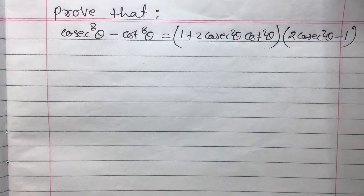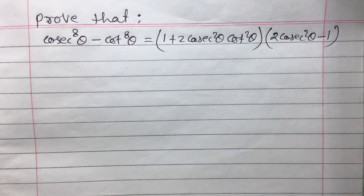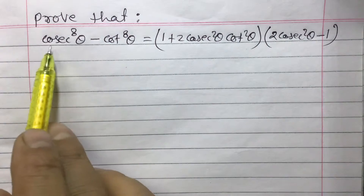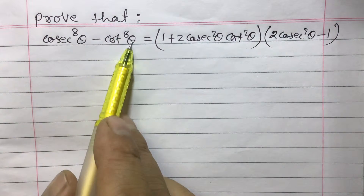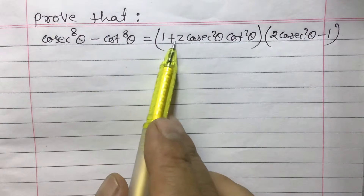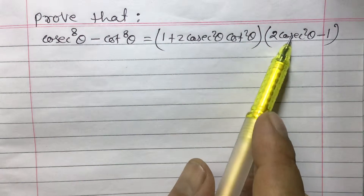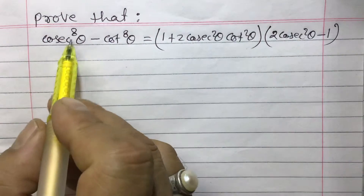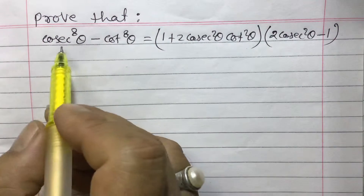Dear students, today I'm going to teach you one more question about trigonometry — proving identity for class 9. The question is: cosec⁸θ + cot⁸θ equals (1 + 2cosec²θ·cot²θ)(2cosec²θ - 1). Since the higher power (power 8) is on the left side, let us solve from the left side.